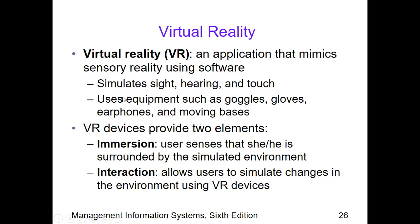VR uses equipment such as goggles, gloves, earphones, and moving bases. There are two key elements for VR devices: immersion and interaction. Immersion means the user senses that he or she is surrounded by the simulated environment, as if actually present in it. Interaction allows users to make actions and decisions within the virtual or computerized world using VR devices.